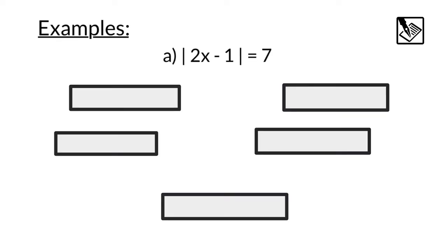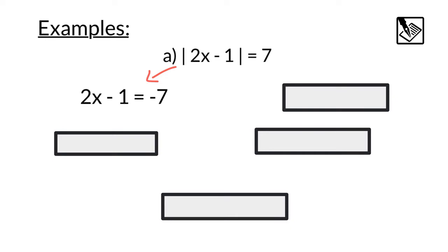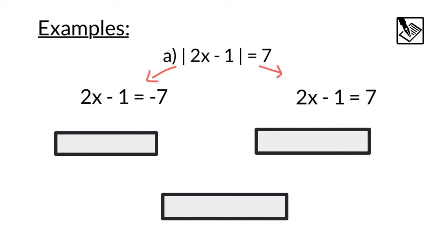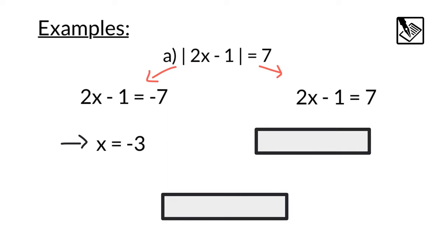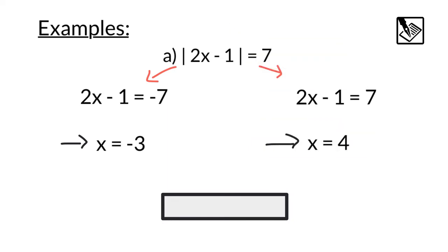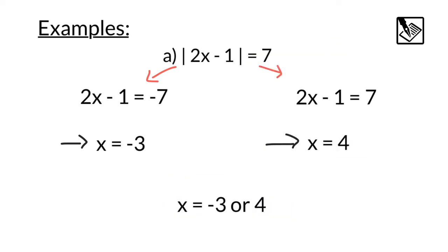Let's look at a couple examples. Here we have absolute value of 2x minus 1 equals 7. This can either equal negative 7 — 2x minus 1 equals negative 7 — or 2x minus 1 can also equal positive 7, just like we saw on the number line before. If we solve each of these, we'll get x equals negative 3 or x equals 4. That's our answer: x equals negative 3 or 4.